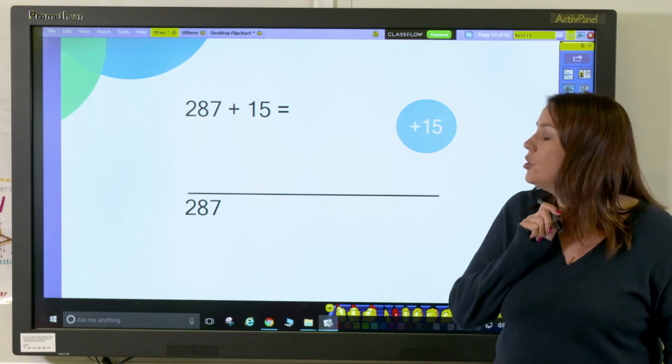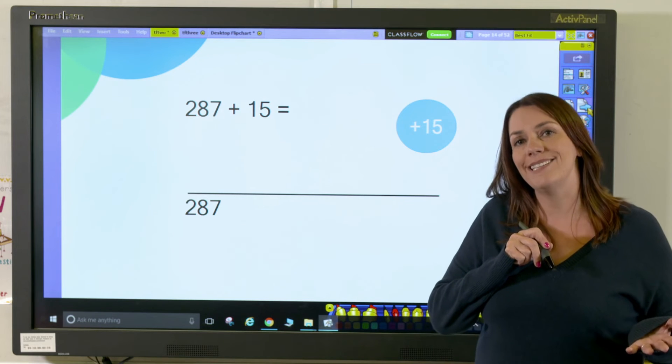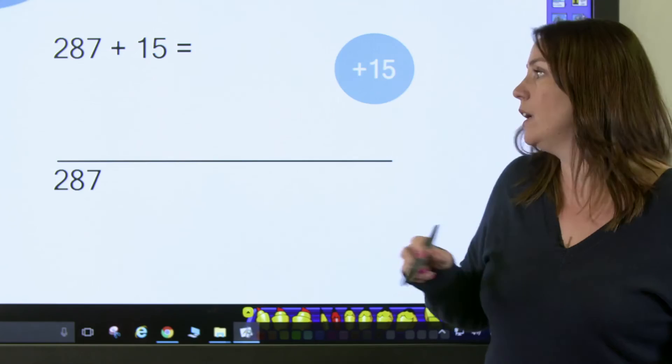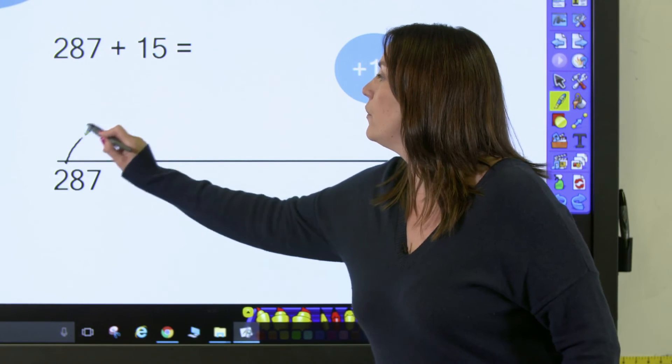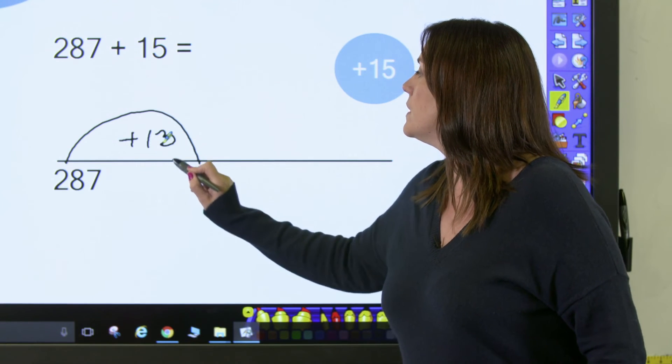So this time I'm going to partition, and I'd be asking pupils, well, how many more would I need to add on to get from 287 to 300? So pupils are going to need to do a jump of 13 to take us to 300.